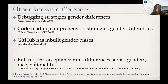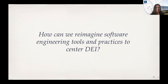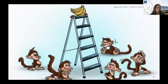We've also seen pull request acceptance rate differences across genders, race, and nationality. A recent systematic literature review by Rodriguez Perez found that almost 70 percent of studies looking at inclusion and diversity in software engineering focus only on gender. We need much more research looking at other demographic differences to find solutions that make software tools and practices more inclusive. This leads me to the question I want to pose for discussion: how can we reimagine software engineering tools and practices to center diversity, equity, and inclusion — not just gender, but broadly for everyone who wants to be a software engineer?